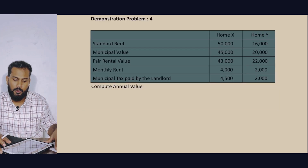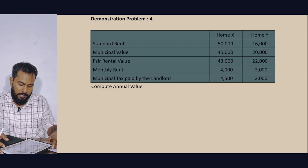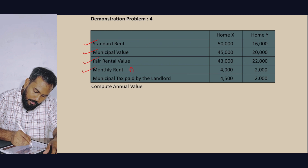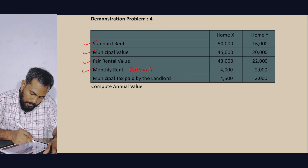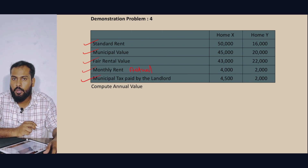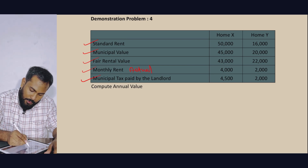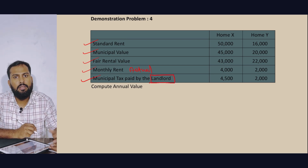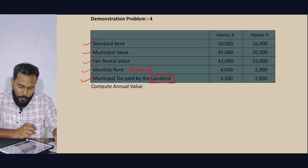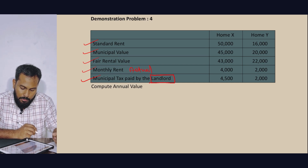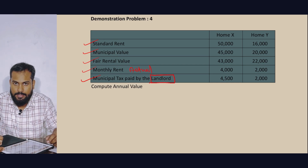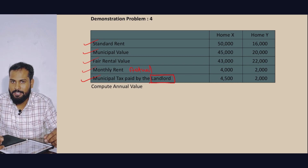The key inputs for the question are: Standard Rent, Municipal Value, Fair Rental Value, Monthly Rent, and Actual Rent. Municipal tax is paid by the landlord — meaning the building owner, not the tenant.